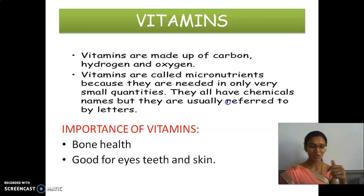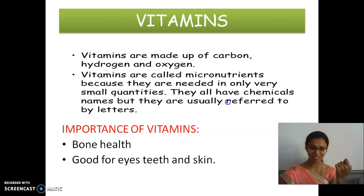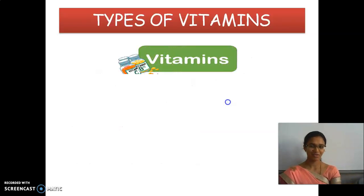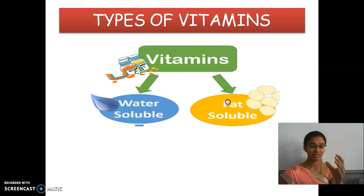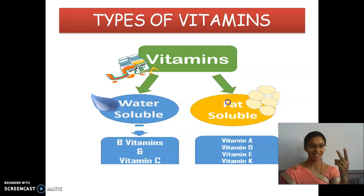Vitamin D, vitamin K. So what is the function of these vitamins? It helps in bone health and it is also good for our eyes, teeth and skin. It is good for our bones. The types of vitamins are water soluble and fat soluble. Water soluble are vitamin B and vitamin C. Fat soluble are vitamin A, D, E and K. So totally there are six types of vitamins.